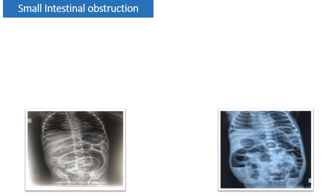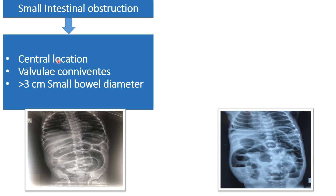How to differentiate large from small intestinal obstruction: whenever there is small intestinal obstruction, the dilated bowel loops will be present in the central part of the abdomen. Whenever there is a dilated small intestine, mucosal folds known as valvulae conniventes will be present throughout the entire circumference — these folds will be visible throughout the entire width of the bowel. Dilatation more than 3 cm diameter is pathological for the small intestine.